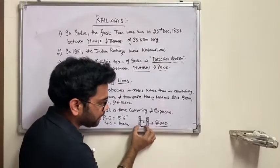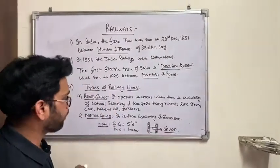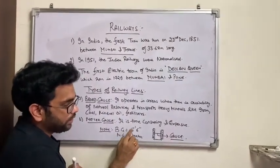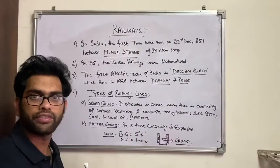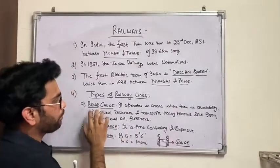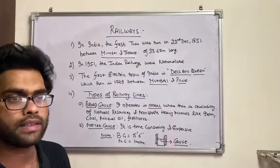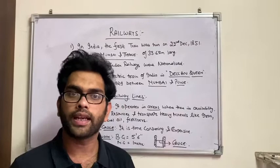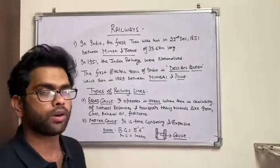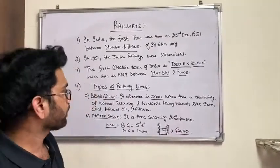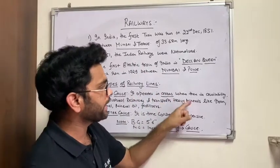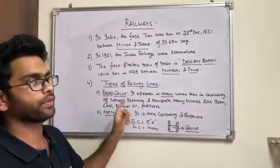So this is called the broad gauge. Broad gauge means that the distance is 5 feet 6 inch. So broad gauge operates in areas - this is an important word. In which areas? How will we select that we have to keep broad gauge, narrow gauge or meter gauge? So initially, the broad gauge operates in areas where there is availability of natural resources.